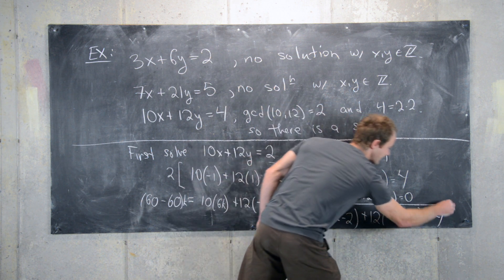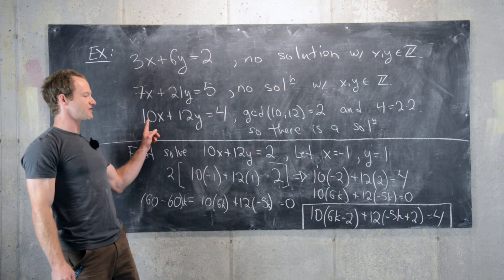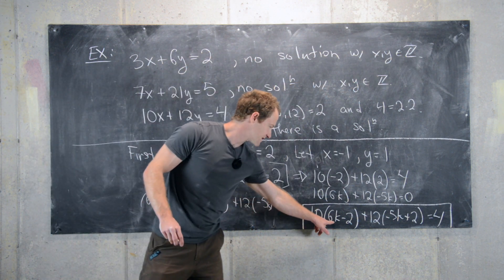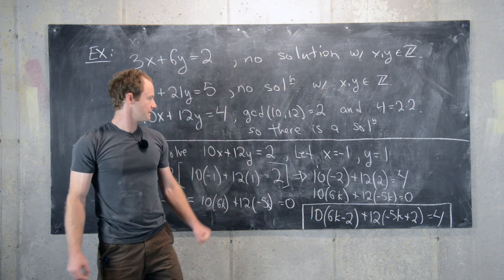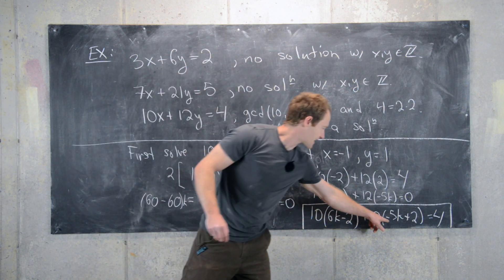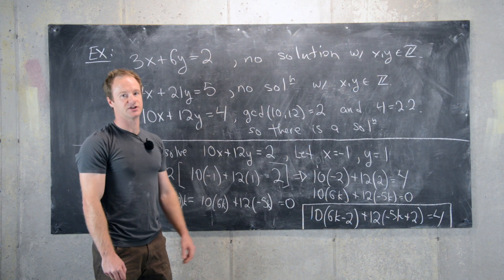Here we have 10 times 6k minus 2 plus 12 times negative 5k plus 2 equals 4. Now we have infinitely many solutions to our given equation. So we have x is 6k minus 2, y is negative 5k plus 2, and k is any integer.